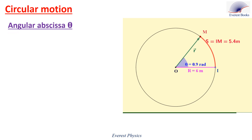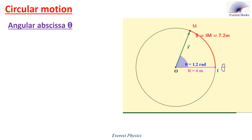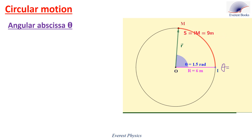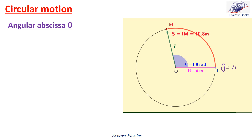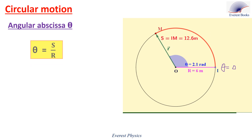The angular abscissa is denoted by theta. In this position, we take theta equals zero. Now, what is the relation between s, theta, and the radius r of the circle? Theta equals s over r.